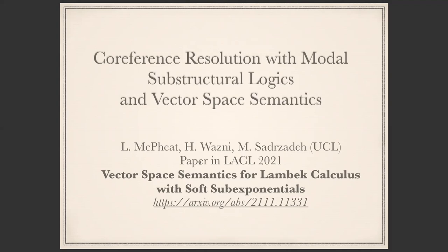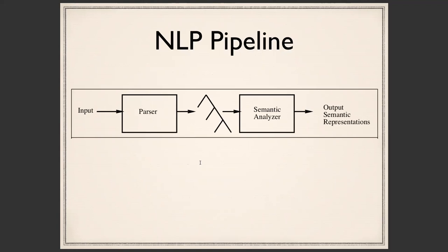I've given this talk a more interesting title: 'Coreference Resolution with Models of Substructural Logics and Vector Space Semantics.' Because Lambek calculus with soft sub-exponentials is a model of substructural logic, and we use this logic to resolve coreference in natural language. I'll give examples — anaphora and ellipses are examples. Without the modalities you can use Lambek calculus for normal sentential analysis, and the vector space semantics has been a very nice bridge to machine learning and advances in deep neural networks.